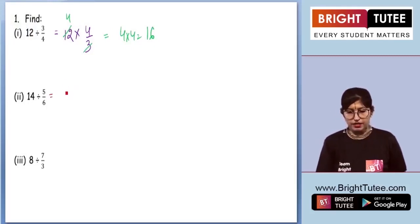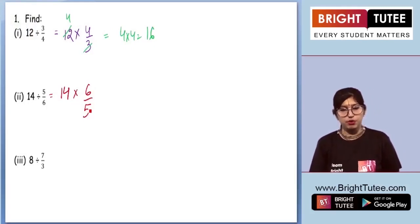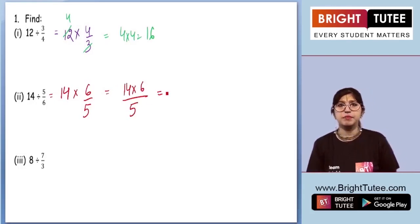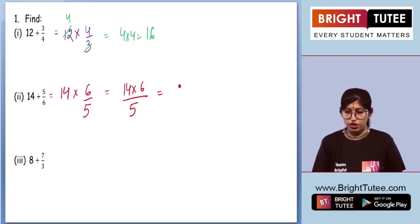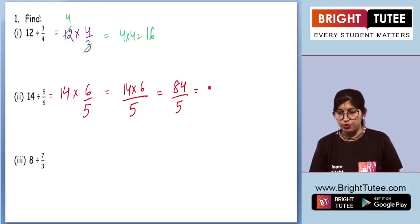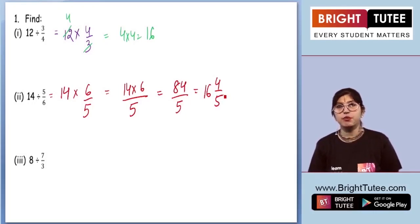Moving on to the second part: 14 divided by 5 by 6. We find the reciprocal of 5 by 6, which is 6 by 5. We cannot cancel anything out, so we get 14 times 6 over 5, which is 84 by 5. We then convert it to a mixed fraction, giving us 16 and 4 by 5.